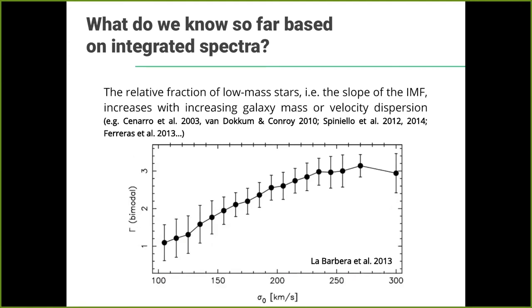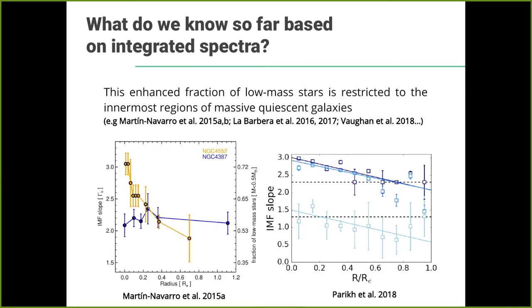What do we know about it? The main result we are fairly secure about is that the IMF varies in more massive galaxies. More massive passive galaxies tend to have a steeper IMF — an enhanced fraction of low mass stars — whereas lower mass galaxies with lower velocity dispersion have IMFs closer to the Milky Way. This is shown in a figure by Francesco La Barbera in 2013, where higher gamma parameter values, meaning a steeper IMF, are found in more massive galaxies. Furthermore, this enhanced fraction of low mass stars seems to be mostly concentrated in the central regions of these massive galaxies.